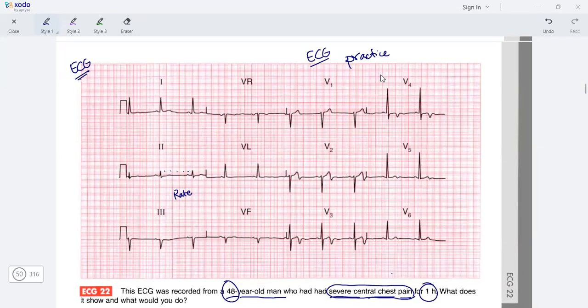Starting with the first ECG, the rate is around 60 beats per minute. The rhythm shows P-R, P-R, P-R consistently, so the rhythm is sinus.